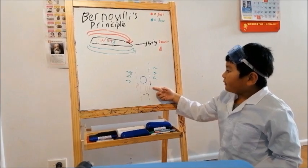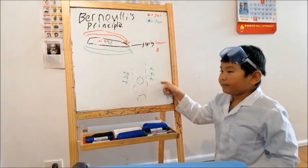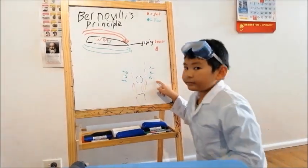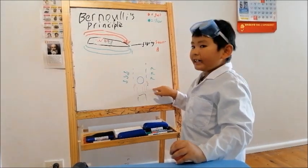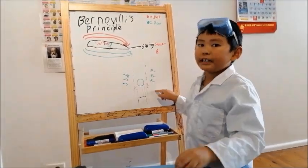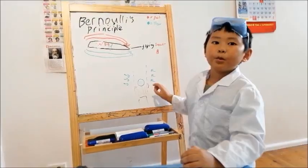The red stands for the fast air and the green is the slow air. Take a look. So, fast air has less pressure and the slow air has more pressure.